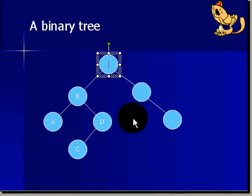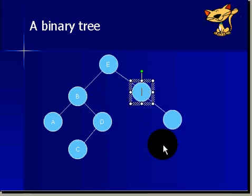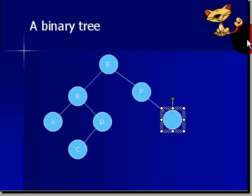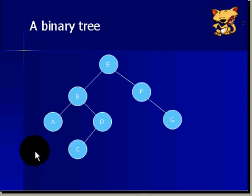Up here, we'll have the letter E. Everything to the left is less than E. Everything to the right, of course, will be greater than E. So, F, G. There's our completed binary search tree.